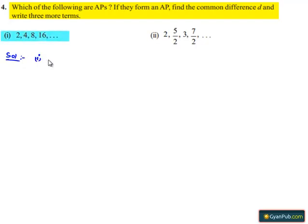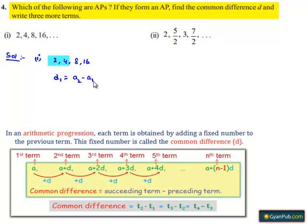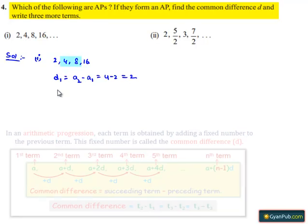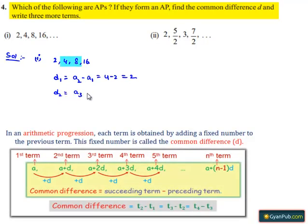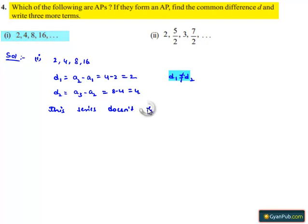Considering the first part, the series is given as 2, 4, 8, 16. Let d1 be the difference between the second and first term, that is a2 minus a1, which is equal to 4 minus 2, that is 2. And let d2 be the difference between the third and second term, that is 8 minus 4, which is equal to 4. Here, the common difference between two consecutive terms is not equal. Therefore, this series does not form an arithmetic progression.